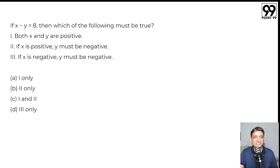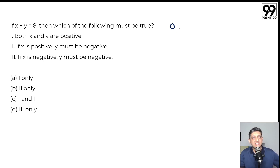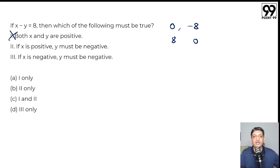Next question: if x minus y equals 8, which of the following must be true? Statement 1: both x and y are positive — not necessarily. If x equals 0, y equals minus 8; if y equals 0, x equals 8. So both x and y need not be positive; one of them can be 0 as well. So statement 1 is not always true, eliminating options A and C.